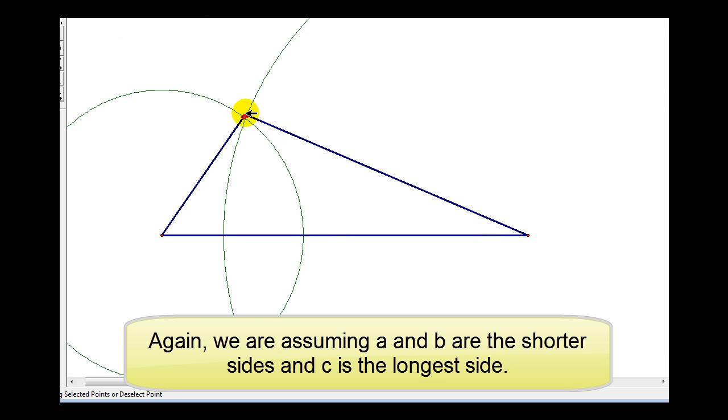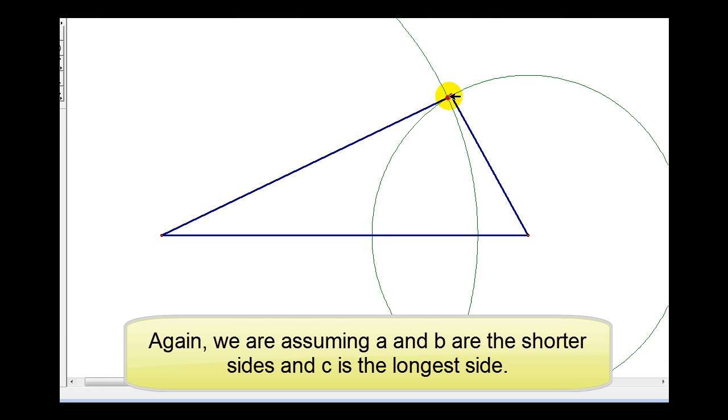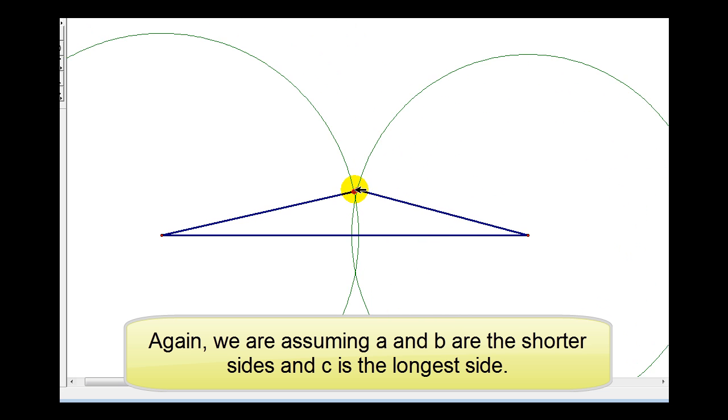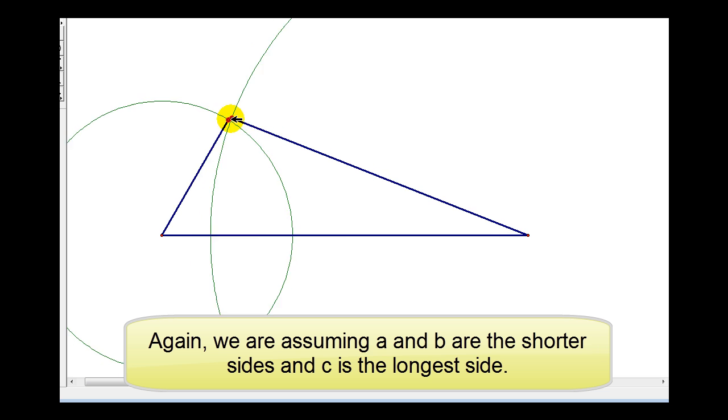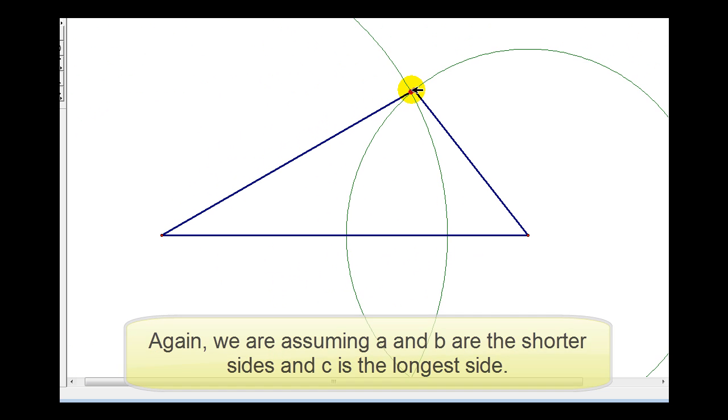And here we see it. So, in order to form a triangle, A plus B must be greater than C, where C is the longest side of the triangle.